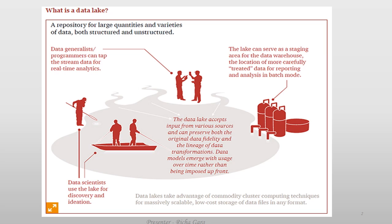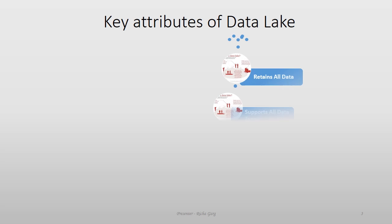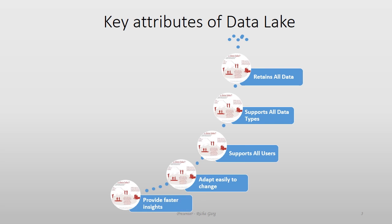Data Lake is also called Bitbucket Staging Area, Landing Zone, or Enterprise Data Hub. Key attributes of Data Lake: it retains all data, supports all data types, supports all users, adapts easily to change, and provides faster insights.